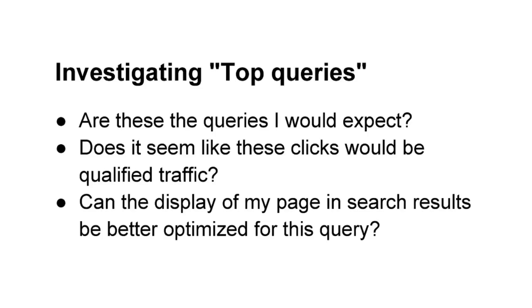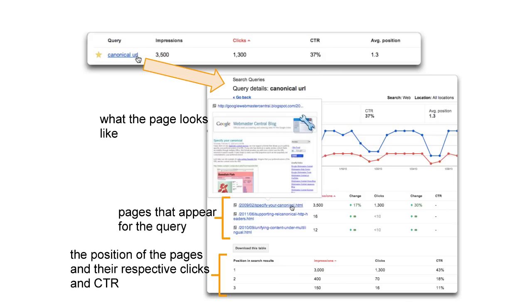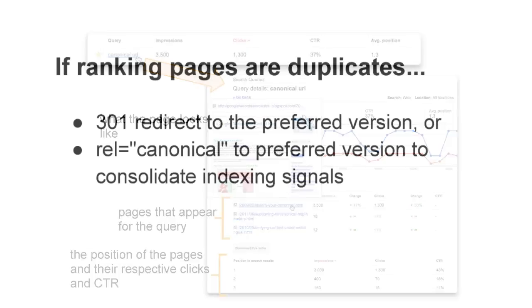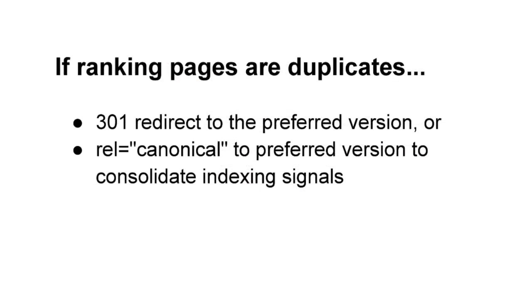Questions to ask yourself as you investigate are: are these the queries I would expect? Does it seem like these clicks would bring qualified traffic? Can the display of my page in search results be better optimized for this query? As you investigate the queries that bring your site the most traffic, simulate the entire searcher experience — from their possible location and motivation, to performing the query, to viewing the search results display, to clicking on your site, and then the user experience. If you click the query, you'll see the pages that appear in results for the query. Hovering on the arrow provides a preview of the page. If there are different URLs with duplicate content, improve your site by consolidating the information, perhaps with a 301 redirect or rel canonical.